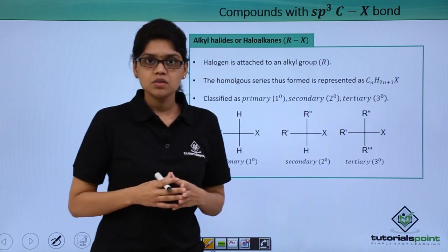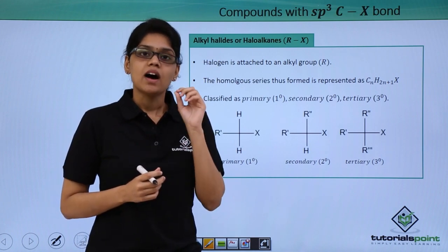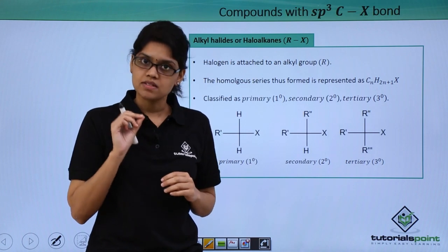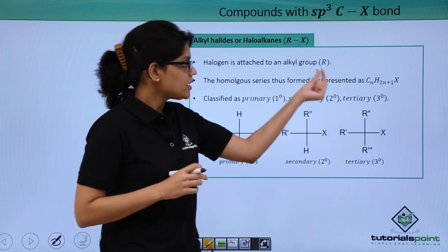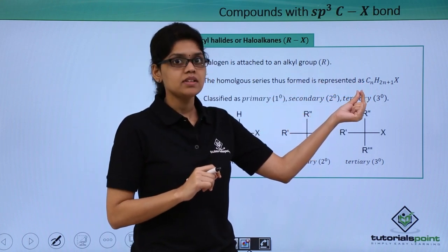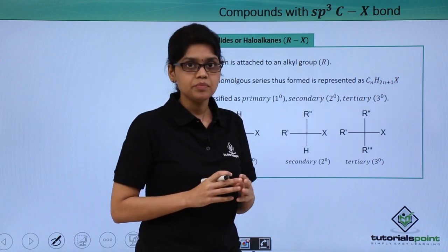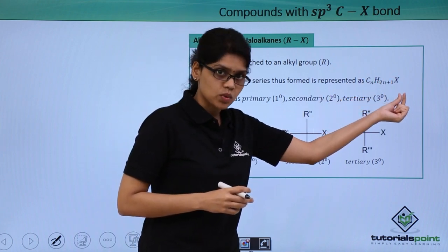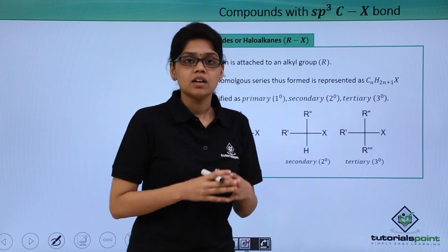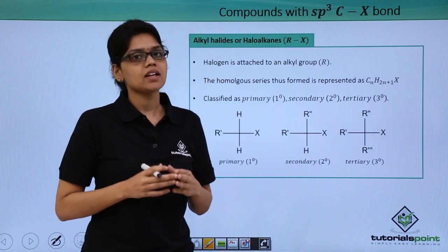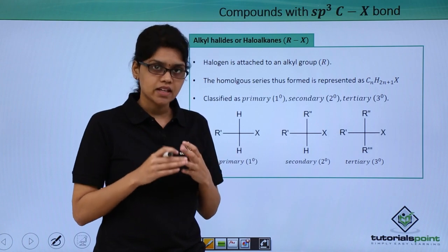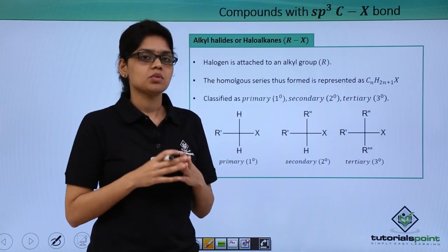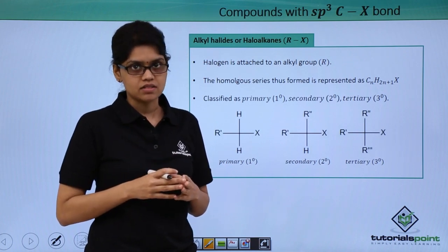This can be easily understood because we know that hydrocarbons can be represented by the formula CnH₂ₙ₊₂. When one hydrogen atom in a hydrocarbon is replaced by a halogen atom, the formula will become CnH₂ₙ₊₁X. Alkyl halides can be further classified into primary, secondary, and tertiary depending on the number of carbon atoms to which the alpha carbon is attached.